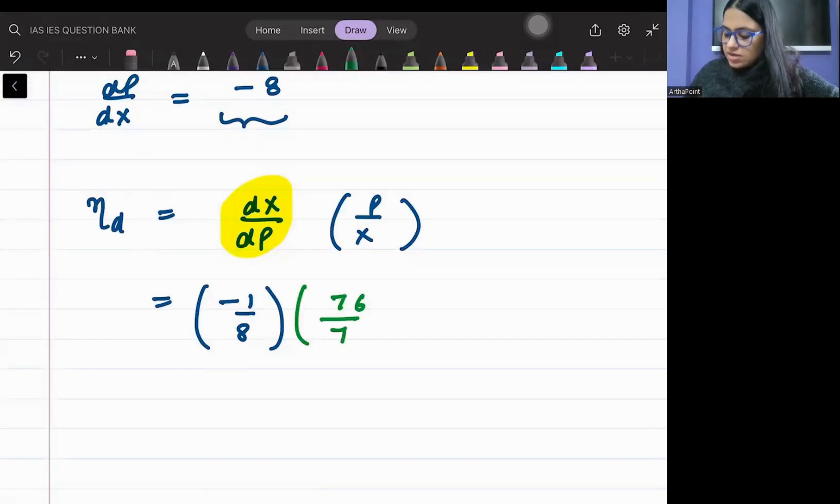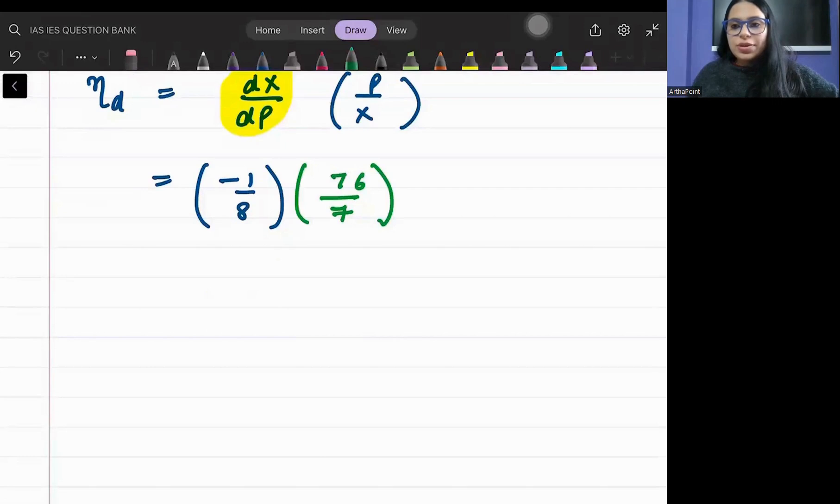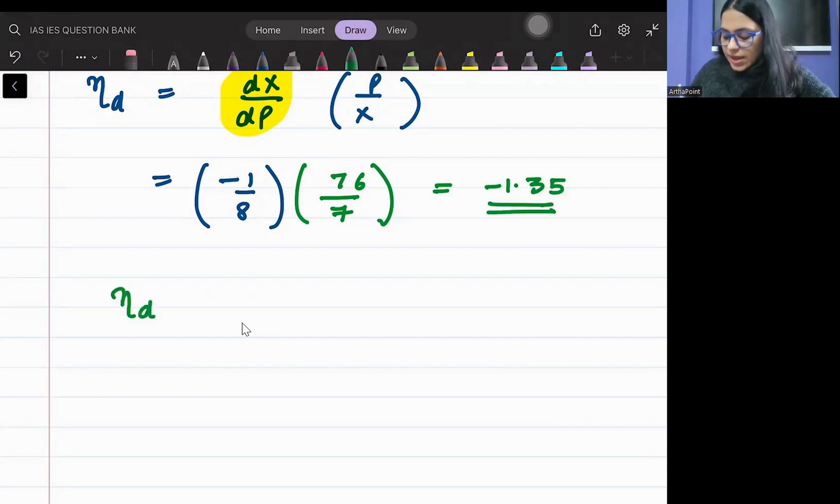P is 76 and X is 7. So 76 by 7. Let's just find out this value. 76 divided by 7 divided by 8 gives me 1.35. So I am getting minus 1.35. So can you see that in absolute value, the elasticity of demand is greater than 1? So we can say that he operates in the elastic region.